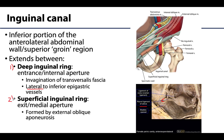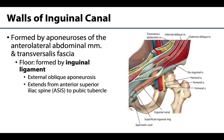The superficial inguinal ring is the exit or medial aperture of the inguinal canal, and it is formed by the external oblique aponeurosis, in this general region here. Structures that traverse the inguinal canal, such as the round ligament of the uterus or the spermatic cord, will exit the superficial inguinal ring en route to their more distal destinations. The walls that make the inguinal canal are formed by the aponeurosis of the anterolateral abdominal muscles as well as the transversalis fascia.